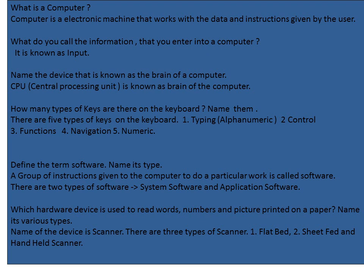Next question: define the term software and name its types. A group of instructions given to the computer to do a particular work is called software. There are two types of software: one is system software, and the other is application software.